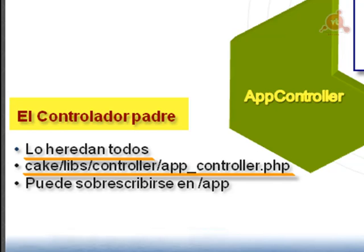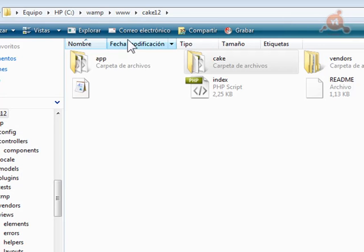We can override the AppController — we can add code inside AppController — but not directly in the controller inside Cake. Instead, we create a new file inside the app directory directly. There we can write methods or properties that all our classes will have access to, since they inherit from it. Let's look at the pros and cons of using a custom AppController that overrides the original Cake one. Here we have our application, called Cake12, and inside it we have the app, cake, and vendors folders.